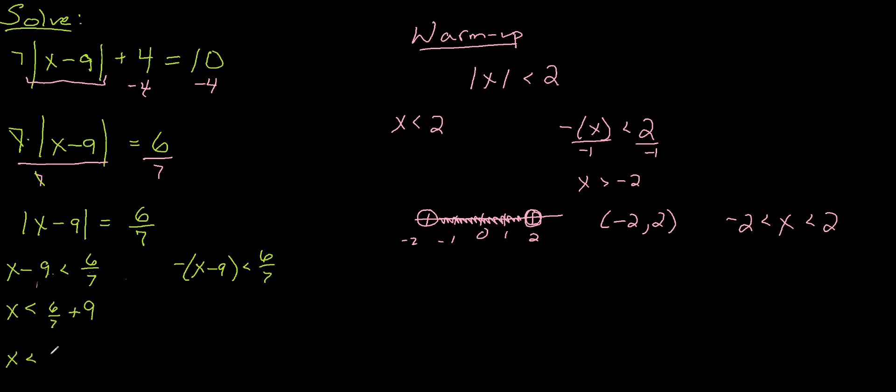So over here if I add 9 to both sides, I'm going to have 6/7 + 9, so that's x < 9 and 6/7. So you could make that an improper fraction. And then over here on the other side you're going to have x - 9 > -6/7.